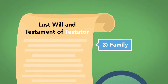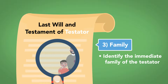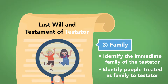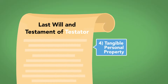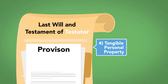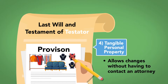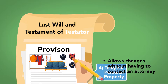Number 3: Family. Many wills include provisions that identify the immediate family of the testator, including spouses and children, if any. There may also be statements as to others whom the testator intends to treat as family for purposes of the will, such as stepchildren or siblings. Number 4: Tangible Personal Property. A will can dispose of personal property as part of the general estate or through a separate provision. Some states allow a testator to dispose of tangible personal property, such as clothing, furniture, and jewelry, by way of a separate document incorporated into the will by reference, allowing the testator to change the list without having to redraft the will itself.